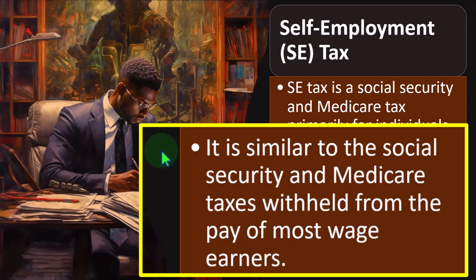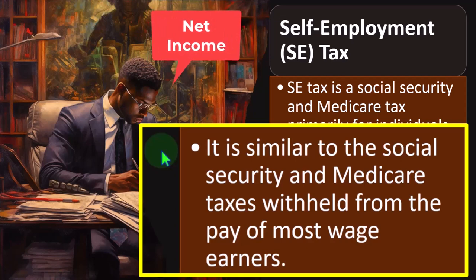The IRS, in order to calculate payroll taxes, will say you are basically the employee of your sole proprietorship, so they'll take the net income calculated on your Schedule C and calculate payroll taxes on that net income. Not only that — they'll think of you as both the employee and employer, so you pay both halves of the tax on the net income you earned.